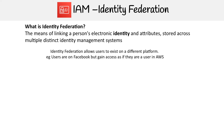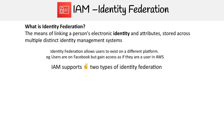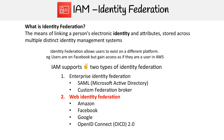An example of this would be your users are on Facebook, but they can gain access as if they are a user in AWS. The idea is that their identities are hosted somewhere else — whether it's Facebook, Google, Active Directory, or whatever. With IAM, it supports two types of identity federation: enterprise identity federation and web identity federation.